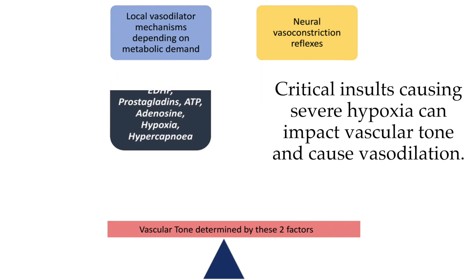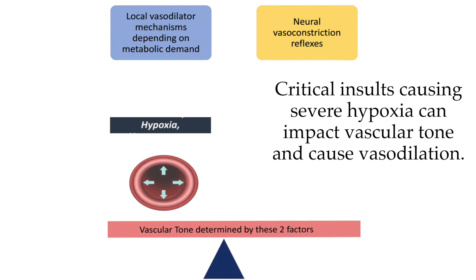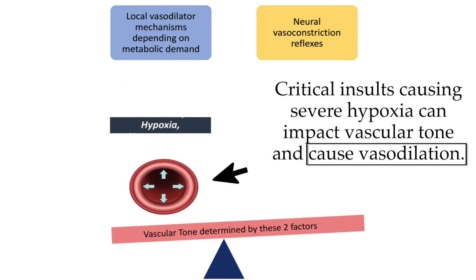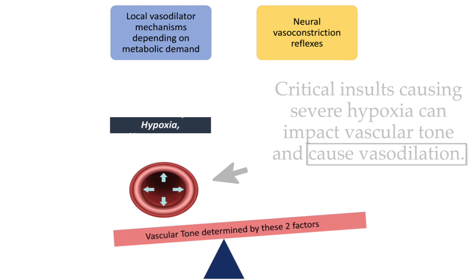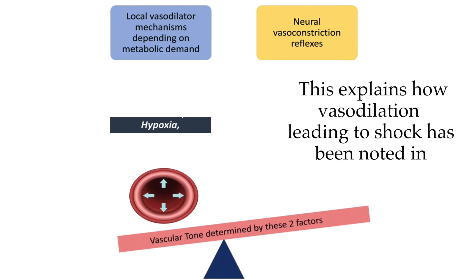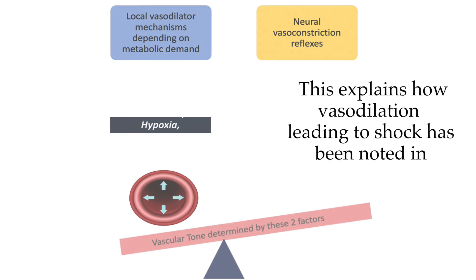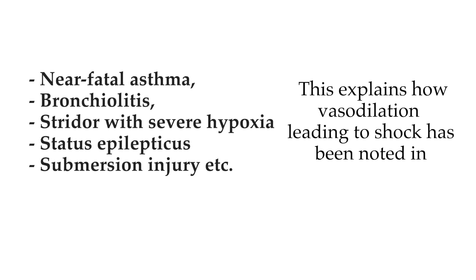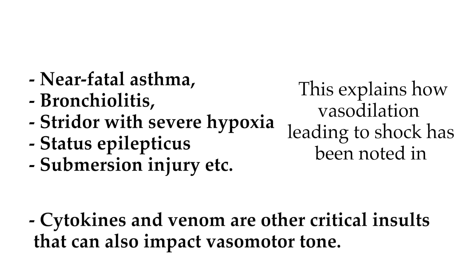An insult causing severe hypoxia can impact vascular tone and cause vasodilation. This explains how vasodilation leading to shock has been noted in near-fatal attacks of asthma, severe bronchiolitis, stridor with severe hypoxia, status epilepticus, and submersion injury. Cytokines and venom are other critical insults that can also impact vasomotor tone.